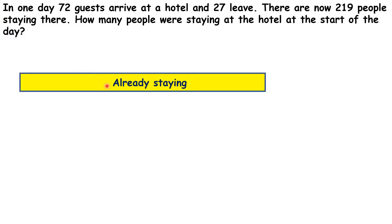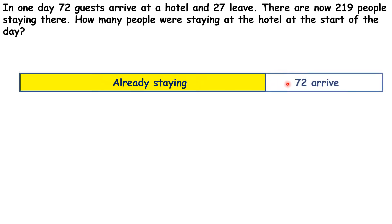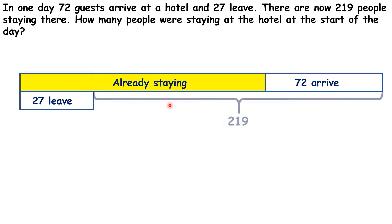So we want to know how many people were staying to begin with, before 72 more guests arrived and 27 left. We also know that there are now 219 people staying there.